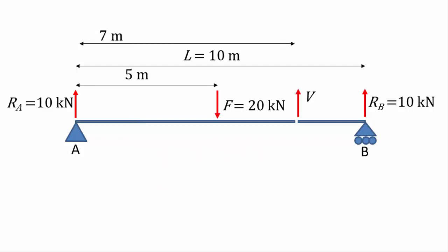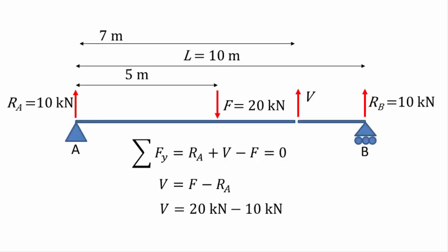Now let's cut the beam at 7 metres and calculate the shear force there. Assuming the resulting shear force points upwards, we write the equilibrium equation for all vertical forces from the start of the beam to the cut point: Ra plus V minus F equals 0. Rearranging gives V equal to F minus Ra. Subbing in the values gives V equal to positive 10 kilonewtons, indicating that the shear force vector does indeed point upwards.